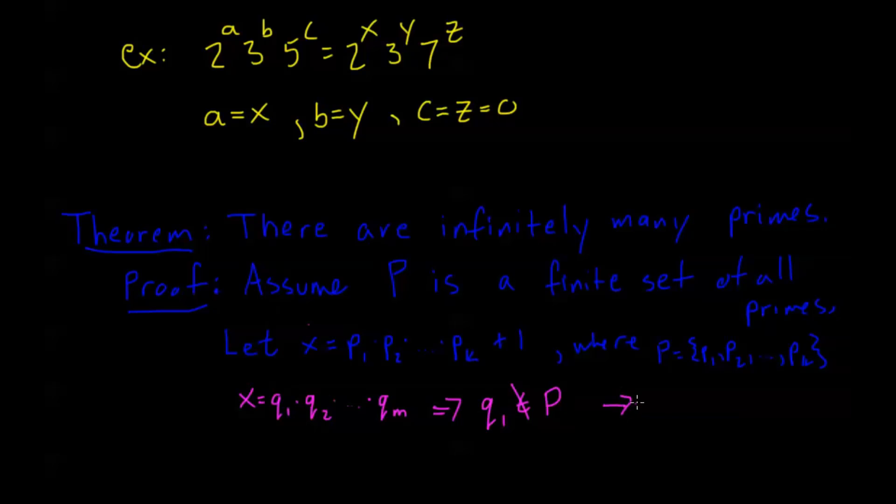So we've reached a contradiction. This is a contradiction to my original claim that there's a finite number of k primes because I took that finite number and I put them all together. My conclusion was that x is either prime and it's a new prime, or x has a prime factorization comprised entirely of new primes outside of my set of finite primes. And there we go. That's a proof by contradiction.